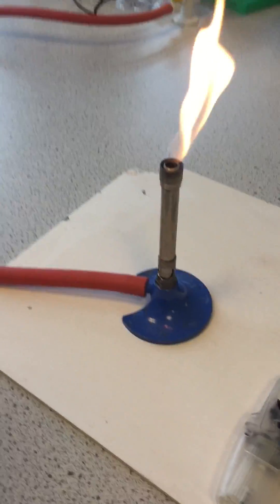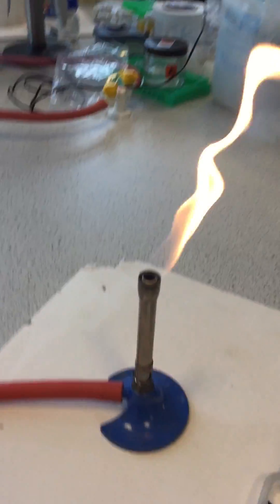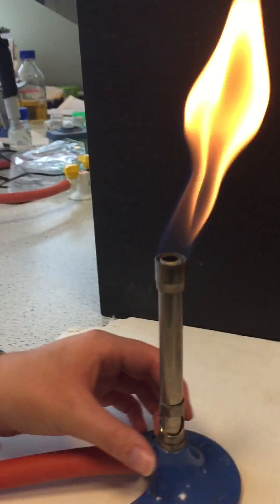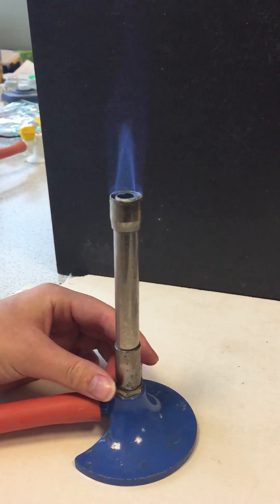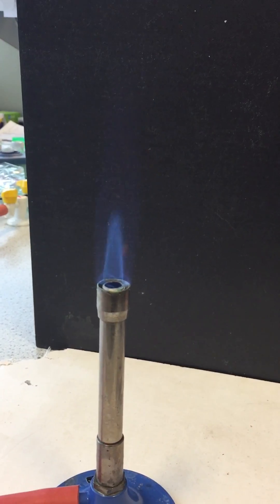The flame comes in two forms: a yellow safety flame, or by adjusting the amount of air, a blue working flame.